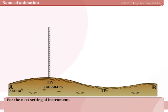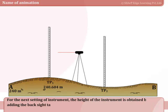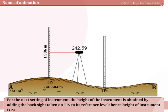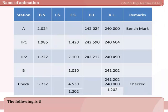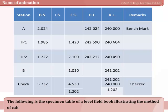For the next setting of instrument, the height of the instrument is obtained by adding the back sight taken on TP1 to its reference level. Hence, the height of instrument is 242.59 meters. The process continues till the reference level of the last point is obtained. The following is the specimen table of a level field book illustrating the method of calculating reduced levels by Height of Instrument Method.